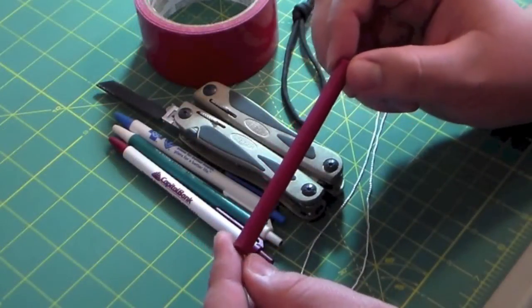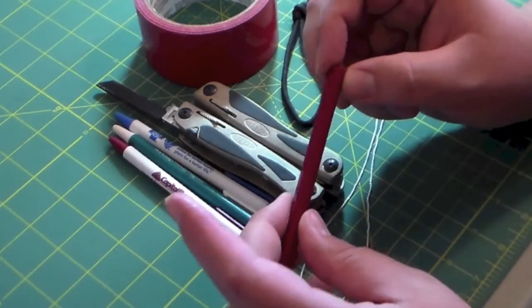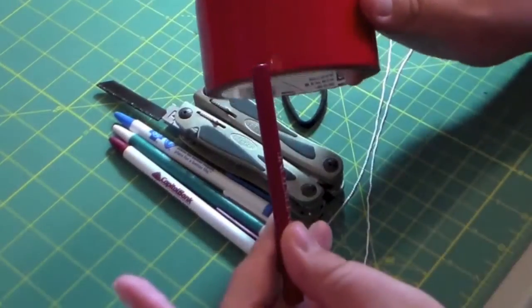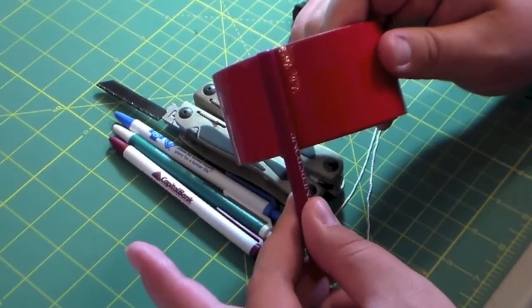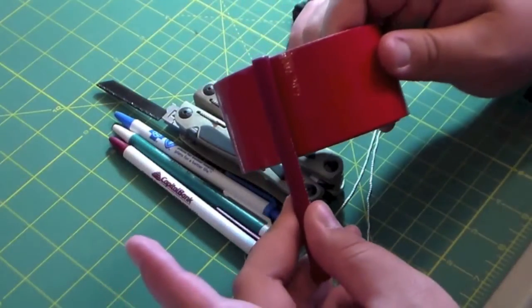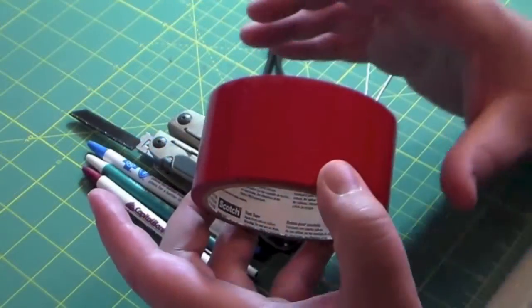Now the first thing we're going to do is we're going to take the shaft of the pen and we're going to cut it down to size. We want it to be exactly the length as our duct tape is wide. Now once we've got our shaft cut,